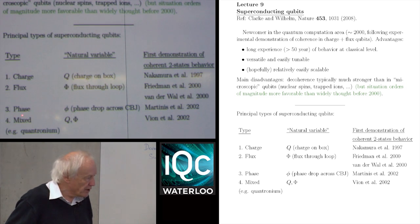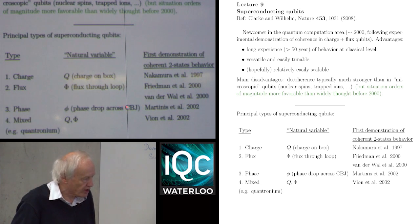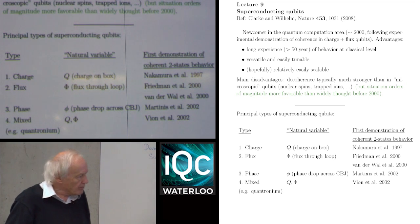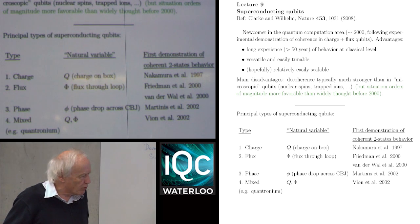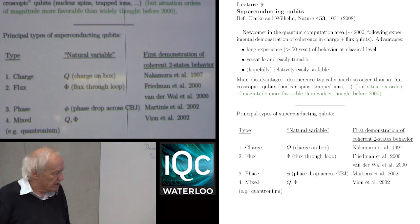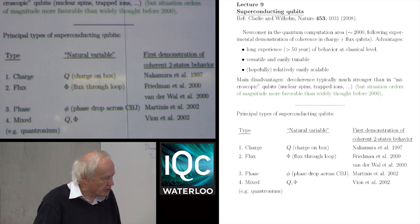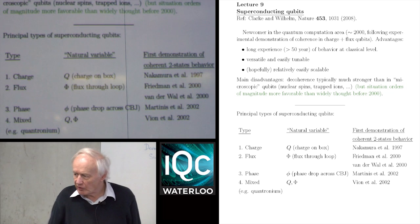Finally, the phase qubit, where the most natural variable is the phase drop across a current-biased Josephson junction, was first demonstrated by John Martinis' group in 2002. One also has a whole set of qubits which in some sense are mixed — certainly non-trivial variants on the original ones. The earliest example was the so-called quantronium setup, which we'll talk about in the next lecture, but you also have transmons, fluxonium, and various other variants.